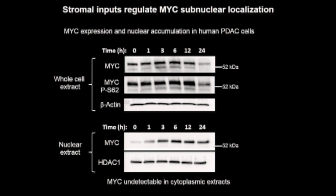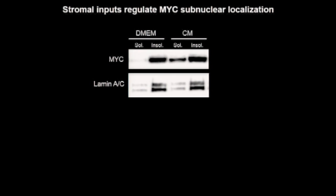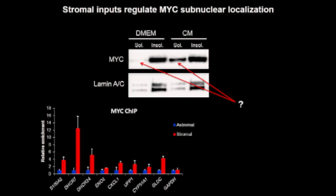To figure out where MYC was hiding, I sub-fractionated nuclei from cells exposed to DMEM or conditioned media. There's a substantial pool of MYC in the insoluble nuclear fraction, but when cells are exposed to signals from stromal fibroblasts, a pool of MYC moves into the soluble fraction of the nucleus. I did ChIP for MYC under astromal and stromal conditions and found that under stromal conditions there is an accumulation of MYC on the promoters of stroma-inducible genes — consistent with MYC function in various cancer cell types. MYC knockdown also reduced histone acetylation at these promoter regions.